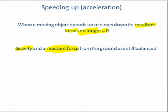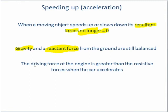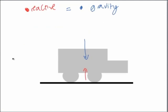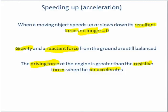The forces contributing to acceleration are, unsurprisingly, the driving force of the engine, which increases above and beyond the resistive forces of friction and air resistance, allowing the car to accelerate. So we have a large driving force but still the same amount of air resistance and friction — and that is what's happening with the forces of an accelerating car.